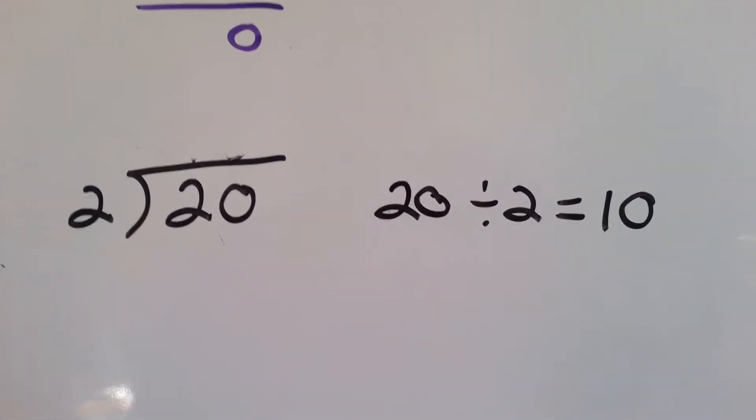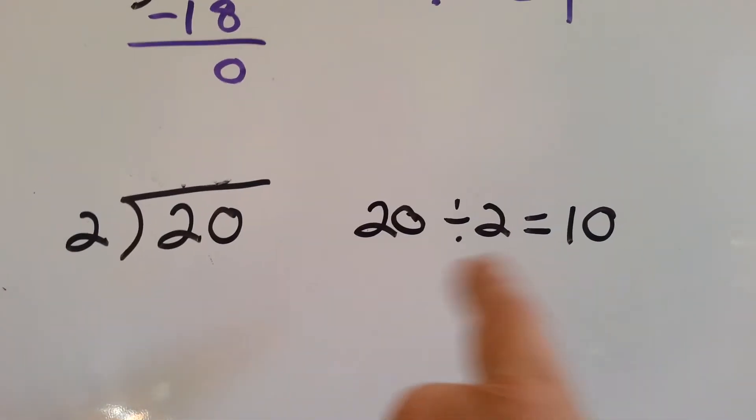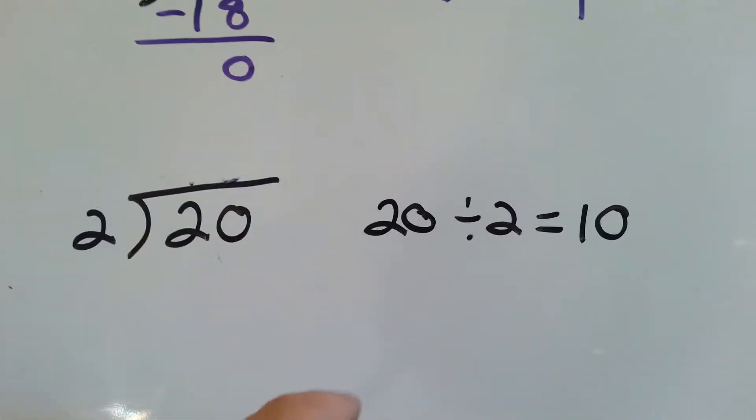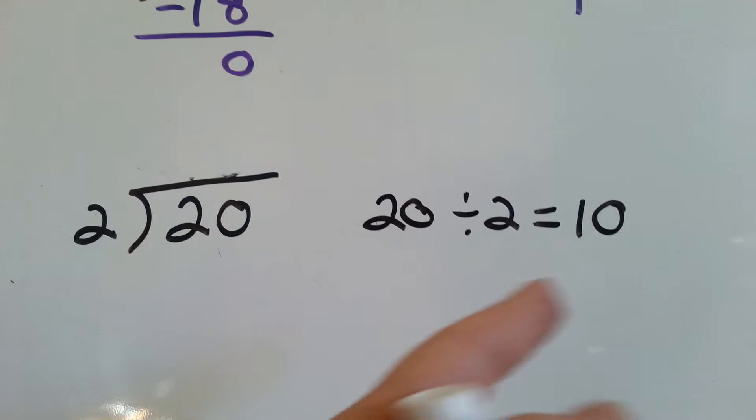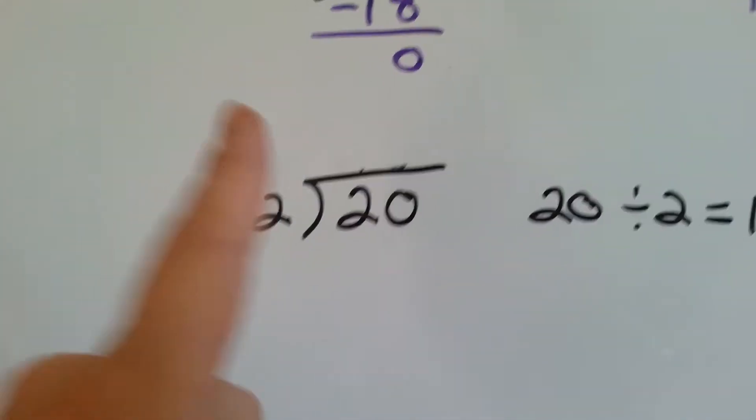How many times does 2 go into 20? 10. 10 and 10 is 20. 2 groups of 10 makes 20. Now, here's the difference.